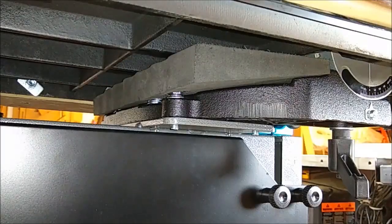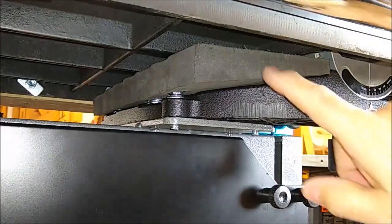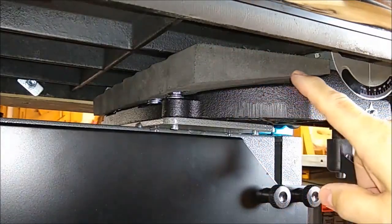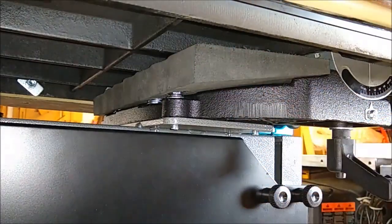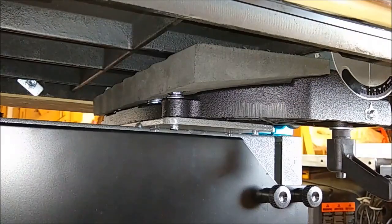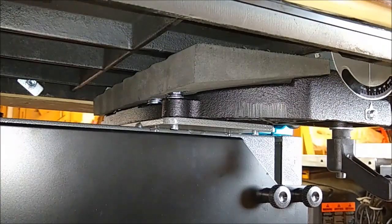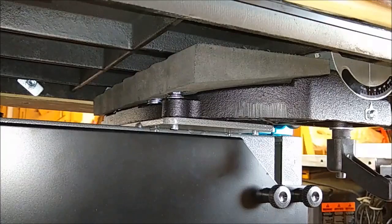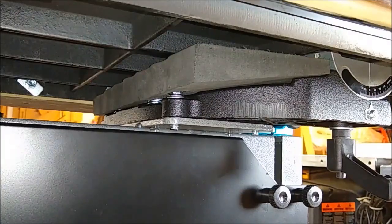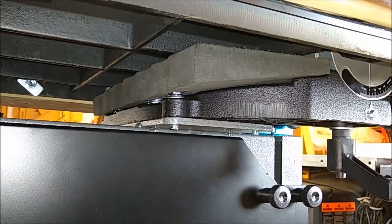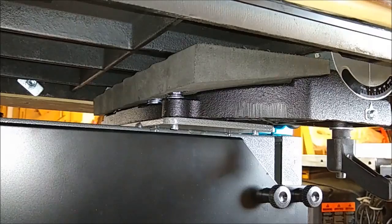And then the final piece of the dust collection mod is this foam that lives under the table. Basically what it does is it blocks any air infiltration from the back side and creates an effective suction box right around the blade. So this is really a key component to the dust collection.